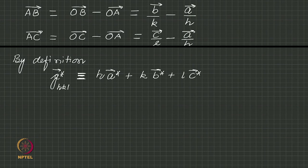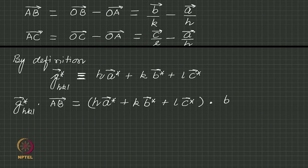Now we just take the dot product of a b and G star h k l. Let us take G star h k l dot a b. We have expressions for both of them, so we just write them out and take the dot product. Do the algebra. That is G star and a b is b by k minus a by h. We can expand this.